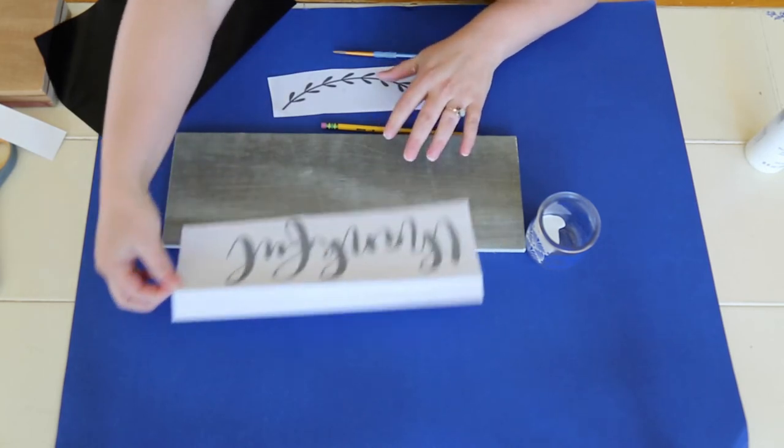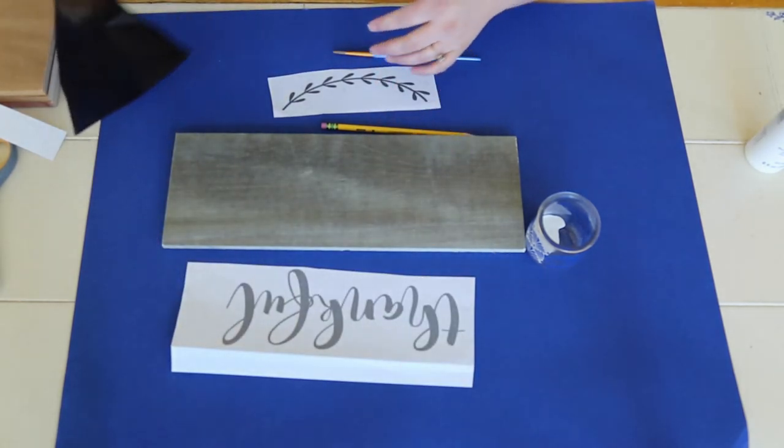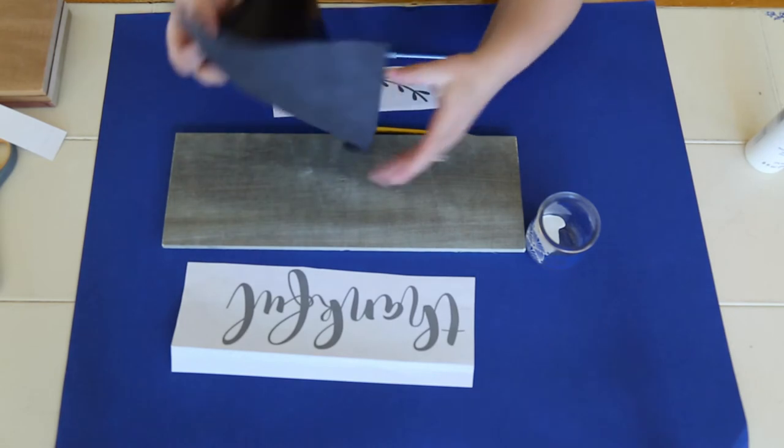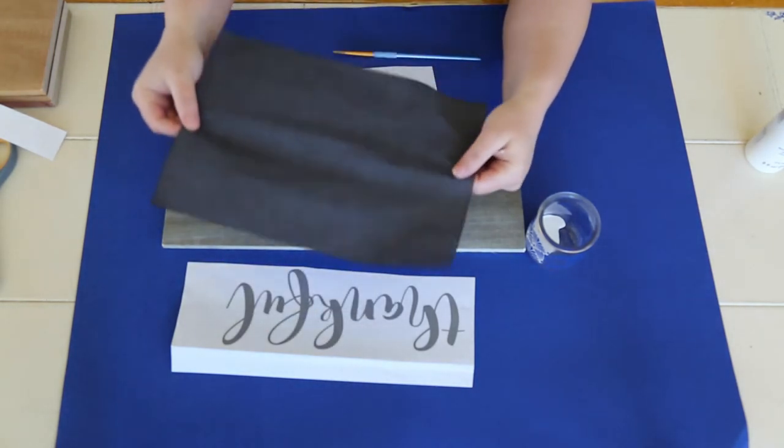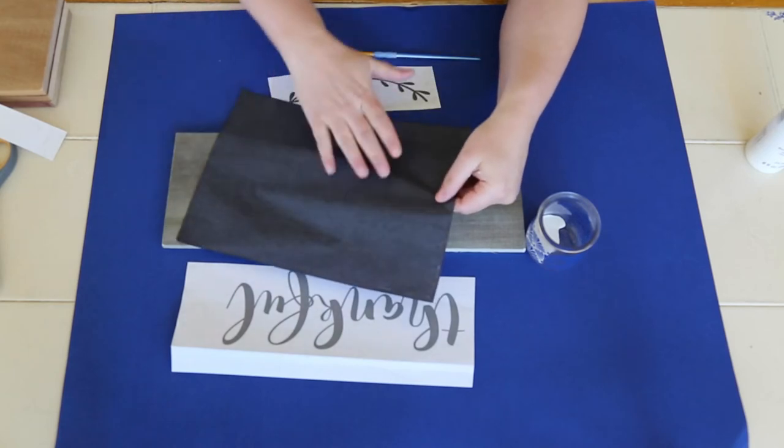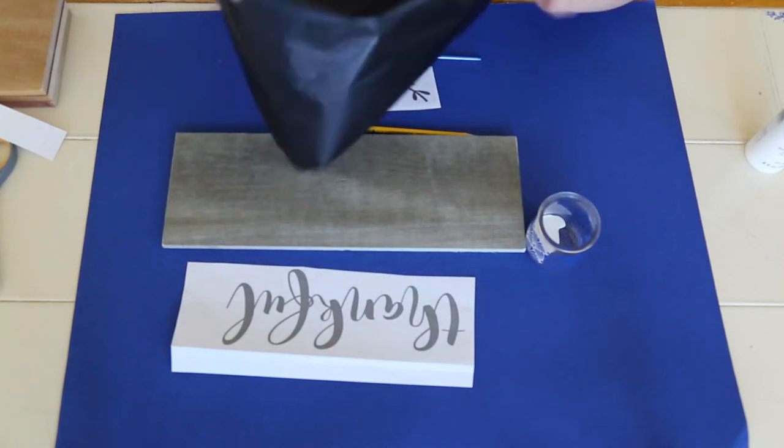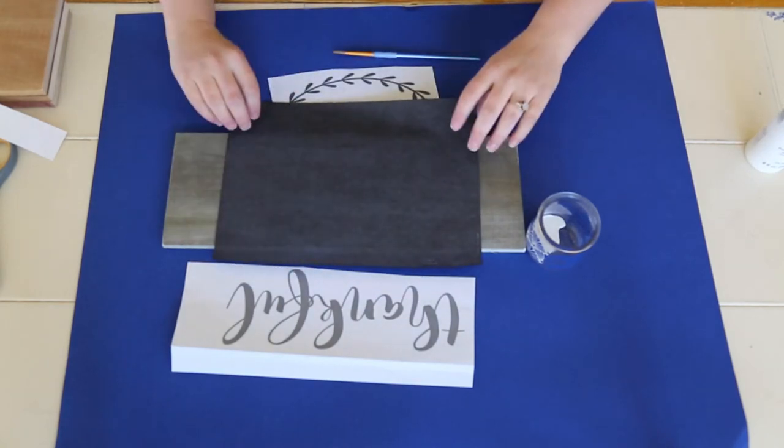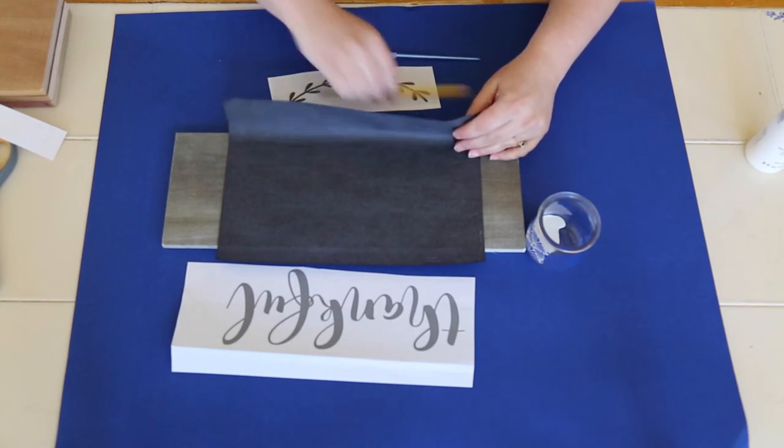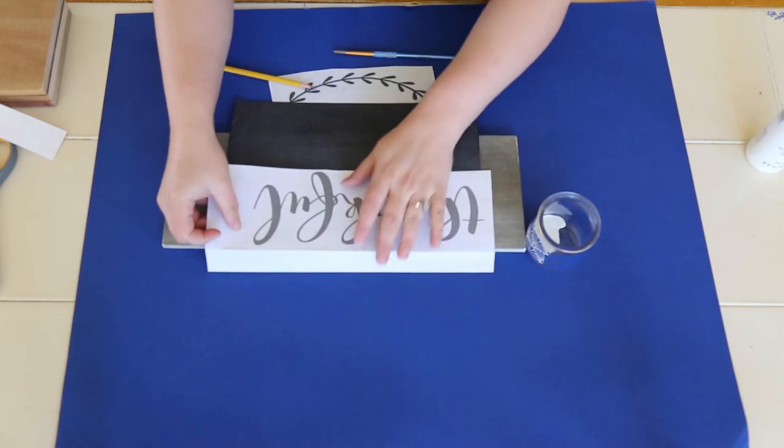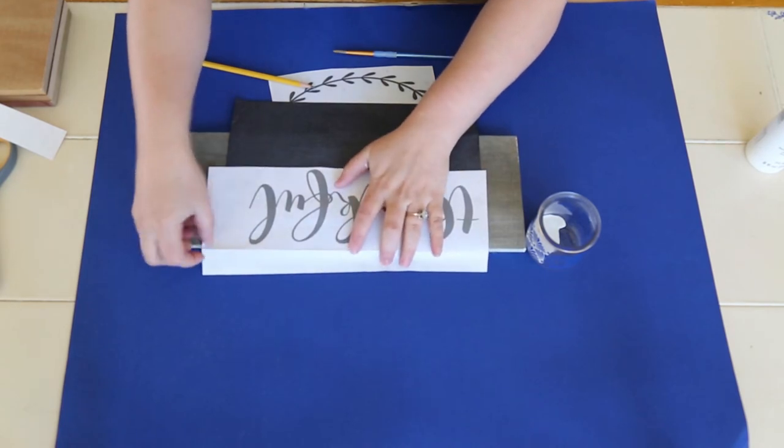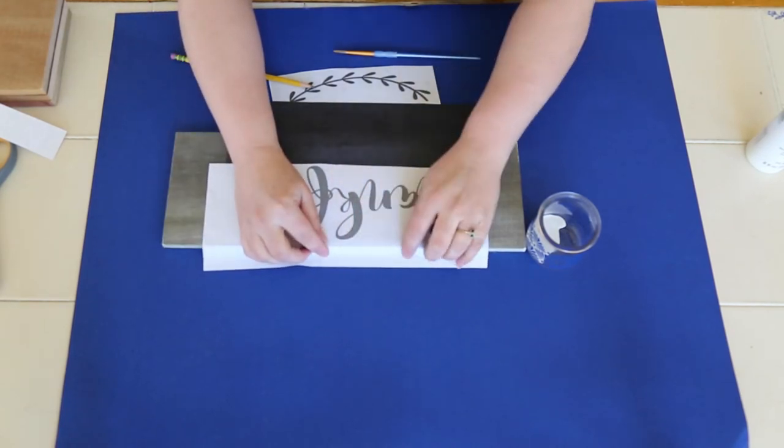The next thing you need to do is take your transfer paper and you'll notice that it has a shiny side and a side that's more of a matte finish. So you want to make sure that the shiny side is facing down like so. And you can place your paper right at the top.